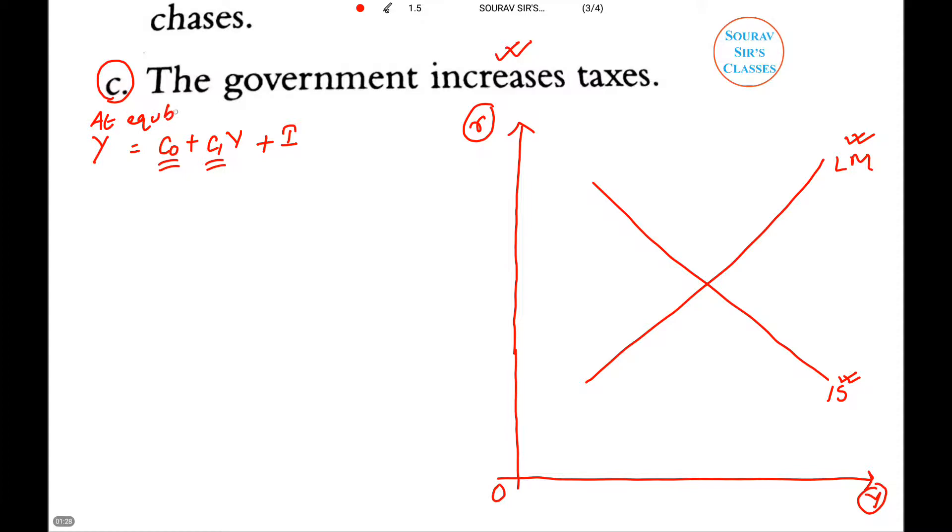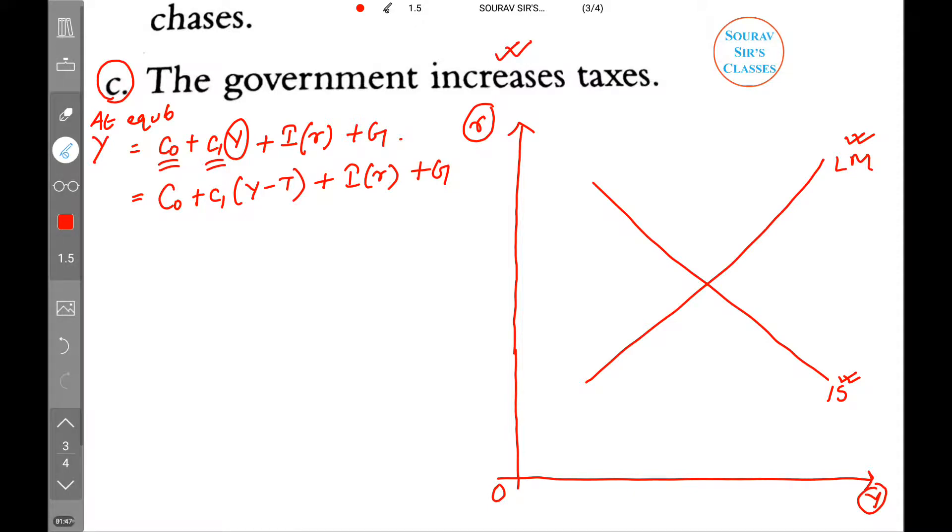This Y can also be written like C naught plus C1(Y-T) plus I(R) plus G. This is the IS equation. If you want to write the LM equation...